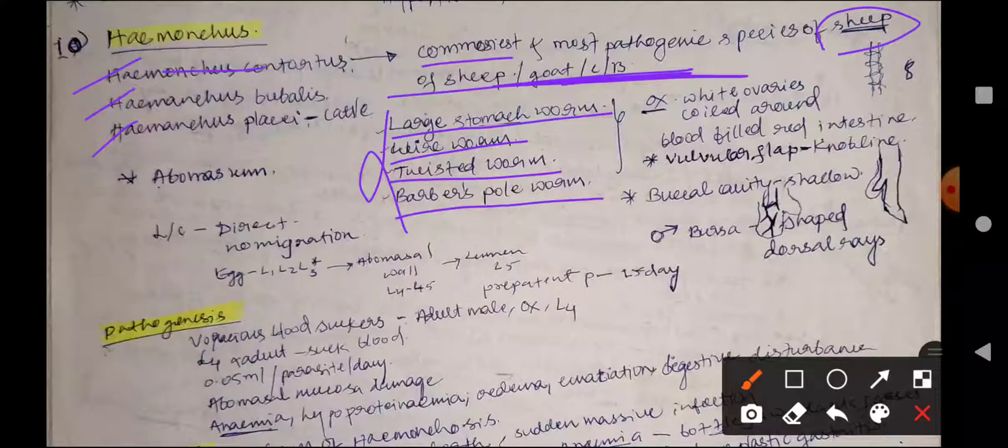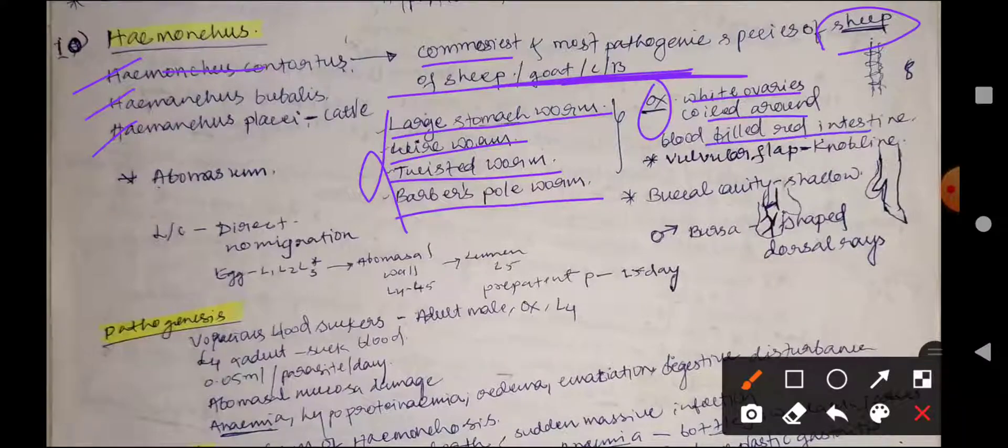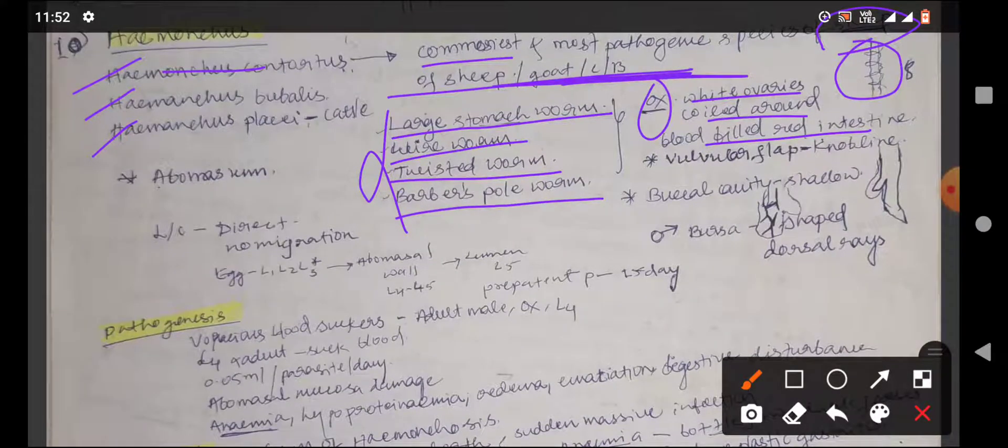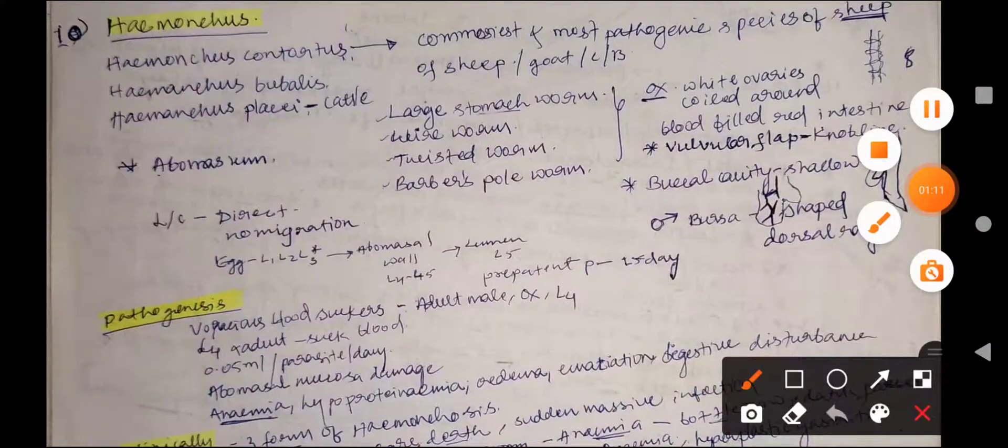The male and female species are characterized based on their specific features. In the case of females, the white ovaries are coiled around the blood-filled red intestine, and the vulvar flap is a knob-like structure in the posterior end of the body.